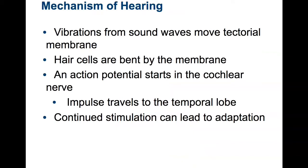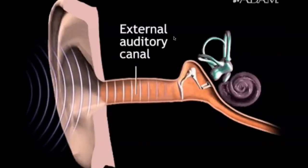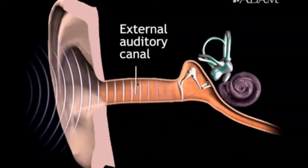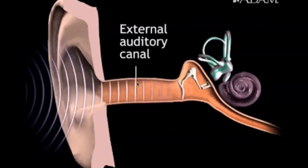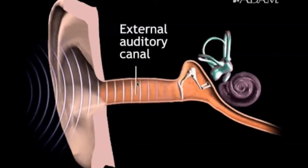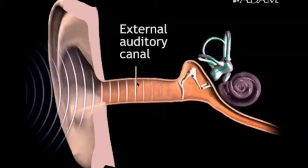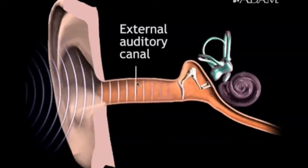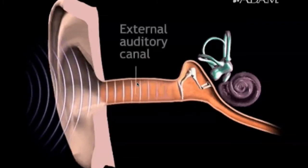Now, how do we actually hear? First, we need to talk about sound waves. The first thing our notes say is that vibrations from sound waves move the tectorial membrane. But what are sound waves? Remember moving your hands back and forth and feeling the air? Sound waves are any vibration that travels through the air.